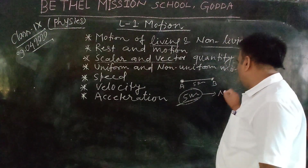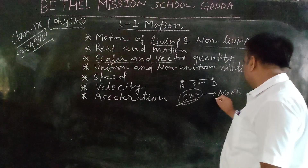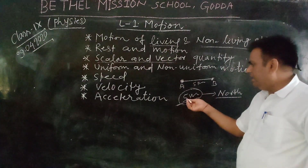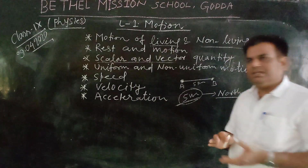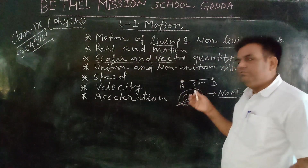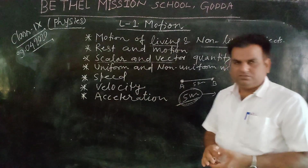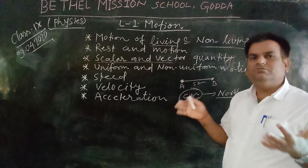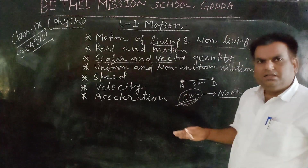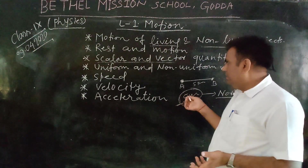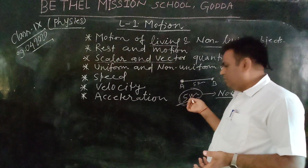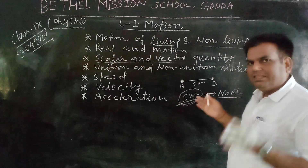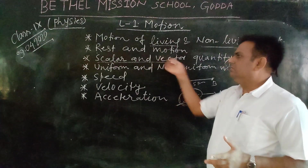If you write five metres north, it now has a direction, so it is a vector quantity. Five metres north — we understand that we have to move five metres north, or five metres south, or five metres east or west — any direction. When the object has magnitude as well as direction, then we say this is the vector quantity.